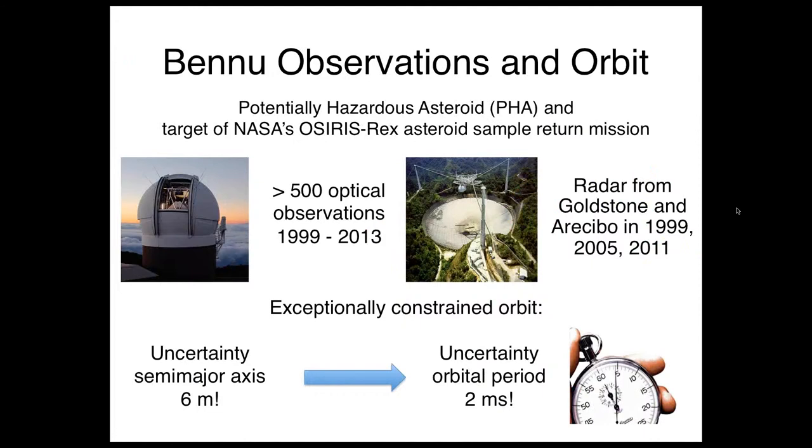So Bennu is a potentially hazardous asteroid. It is the target of the OSIRIS-REx mission, as I mentioned, and it's got a very well-contained orbit. We've got 14 years of optical tracking with some very high-precision observations there. Even more important are the three apparitions from Goldstone and Arecibo with high-precision ranging.